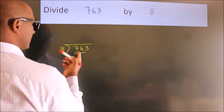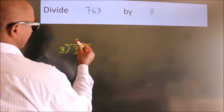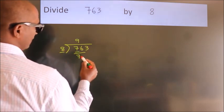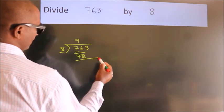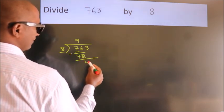A number close to 76 in the 8 table is 8 nines 72. Now, we should subtract. We get 4.